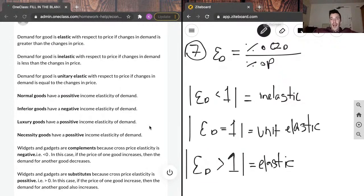And demand for good is unitary elastic or unit elastic with respect to price if changes in demand is equal to the changes in price. That's what I was talking about, proportionality.